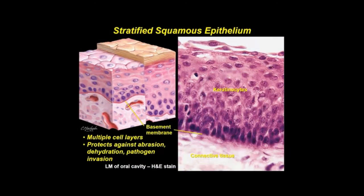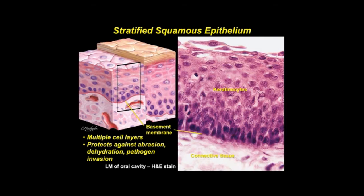Stratified squamous epithelium is a multilayered epithelium that mainly protects against abrasion, dehydration, and invasion of pathogens. Its name derives from the shape of the outer layer of flattened cells. Two types exist: non-keratinized and keratinized. Non-keratinized stratified squamous epithelium lines most of the oral cavity, pharynx, epiglottis, vocal cords, esophagus, anal canal, vagina, parts of the male and female urethra, and cornea.